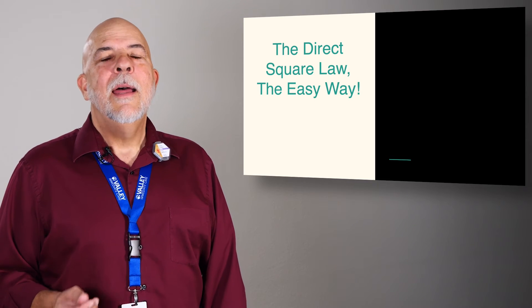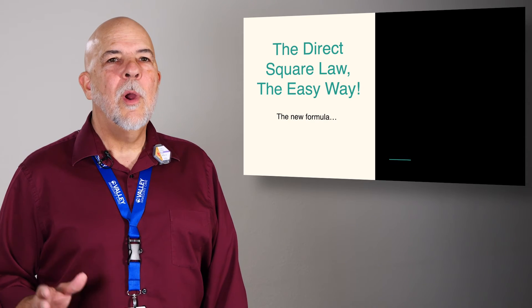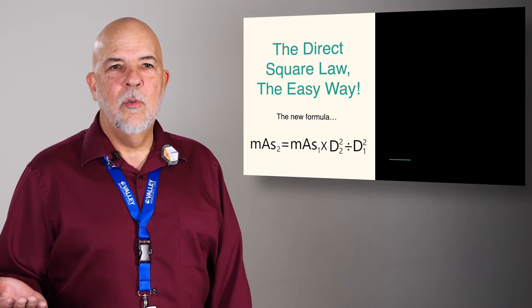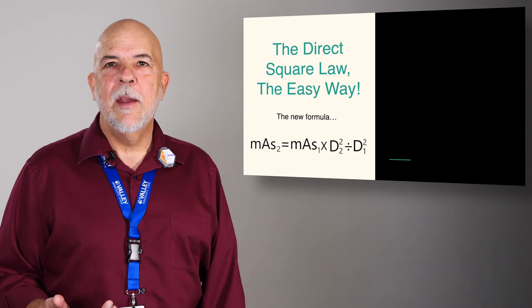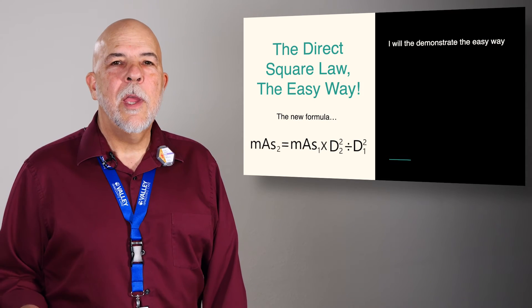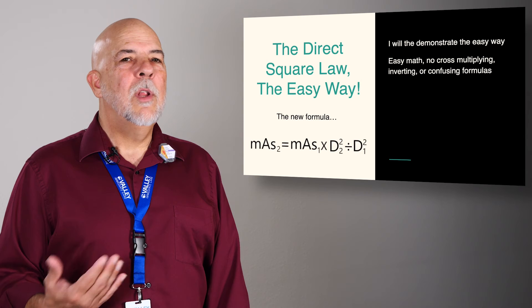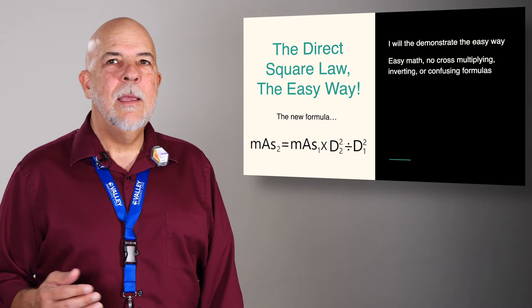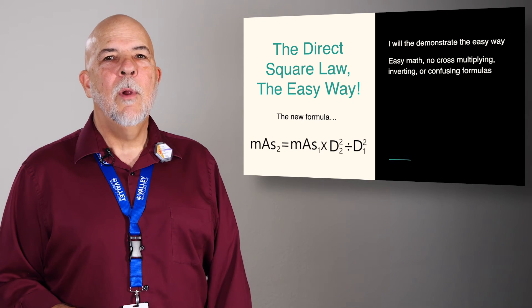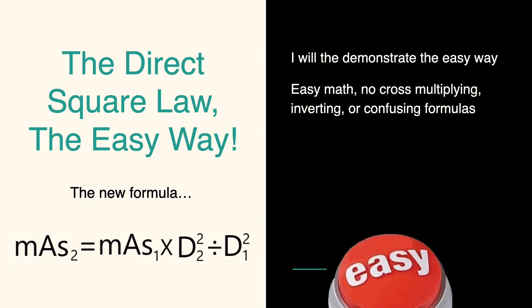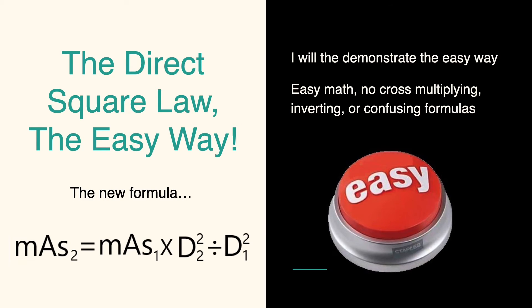The new formula, it's very similar to the inverse square law in that it is direct. It goes straight through. You square your numbers, multiply and divide. That's it. We'll do a quick demonstration. We'll eliminate the cross multiplying, inverting, and just getting rid of that confusing formula. When we're done, you'll be saying, that was easy.